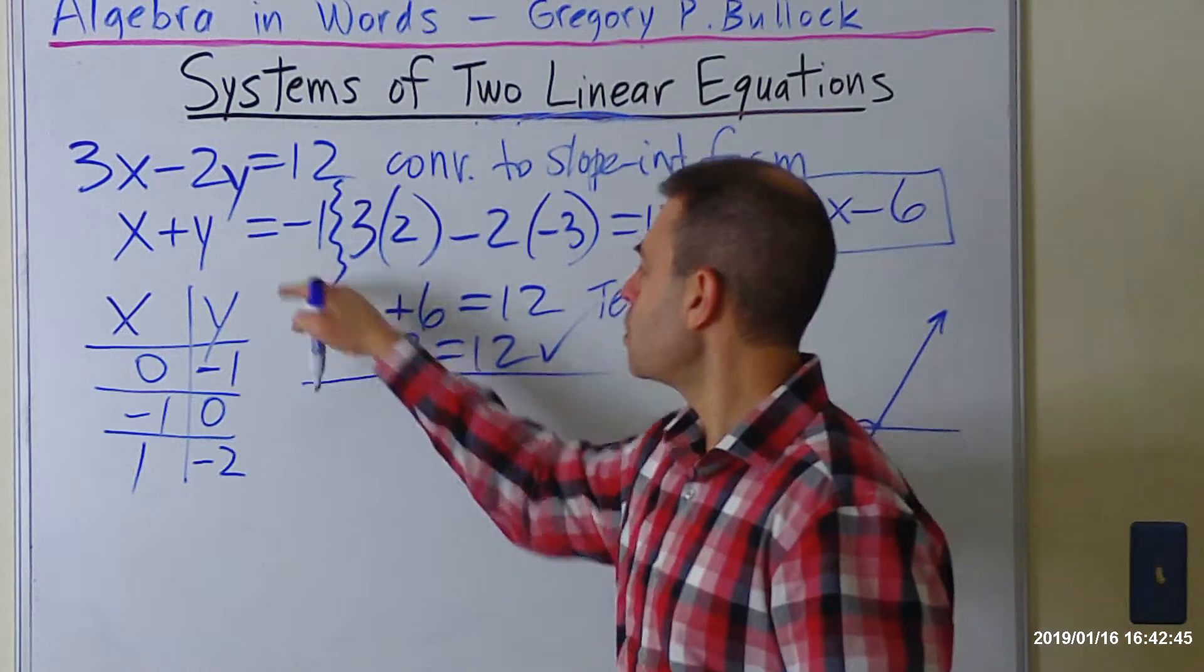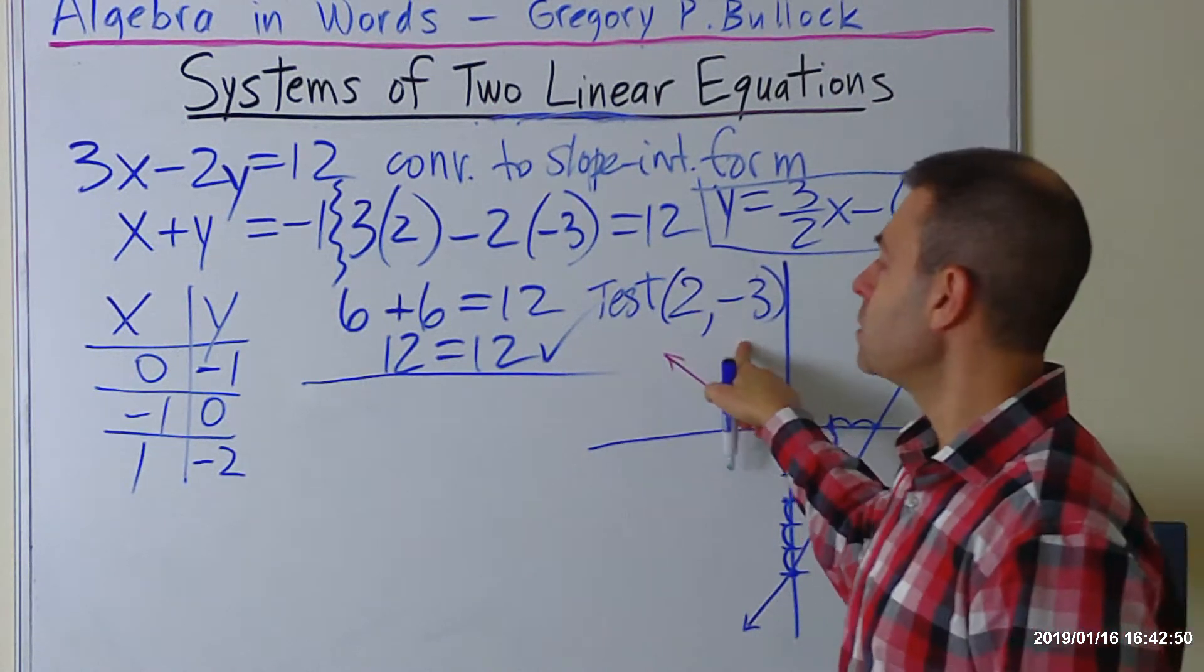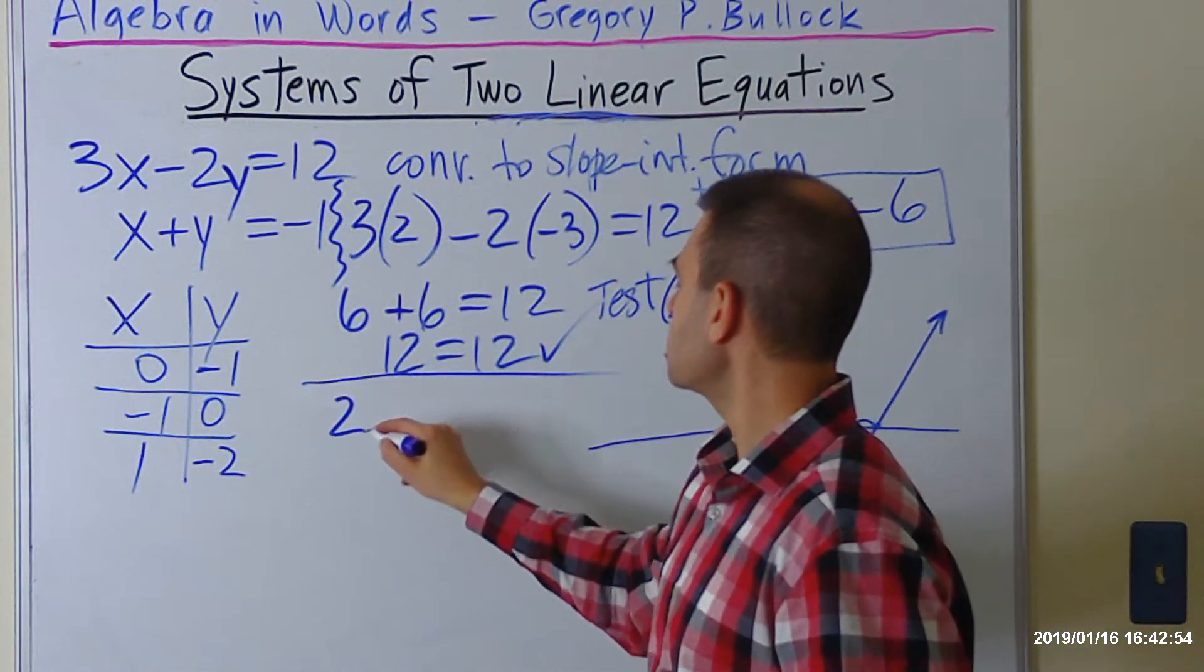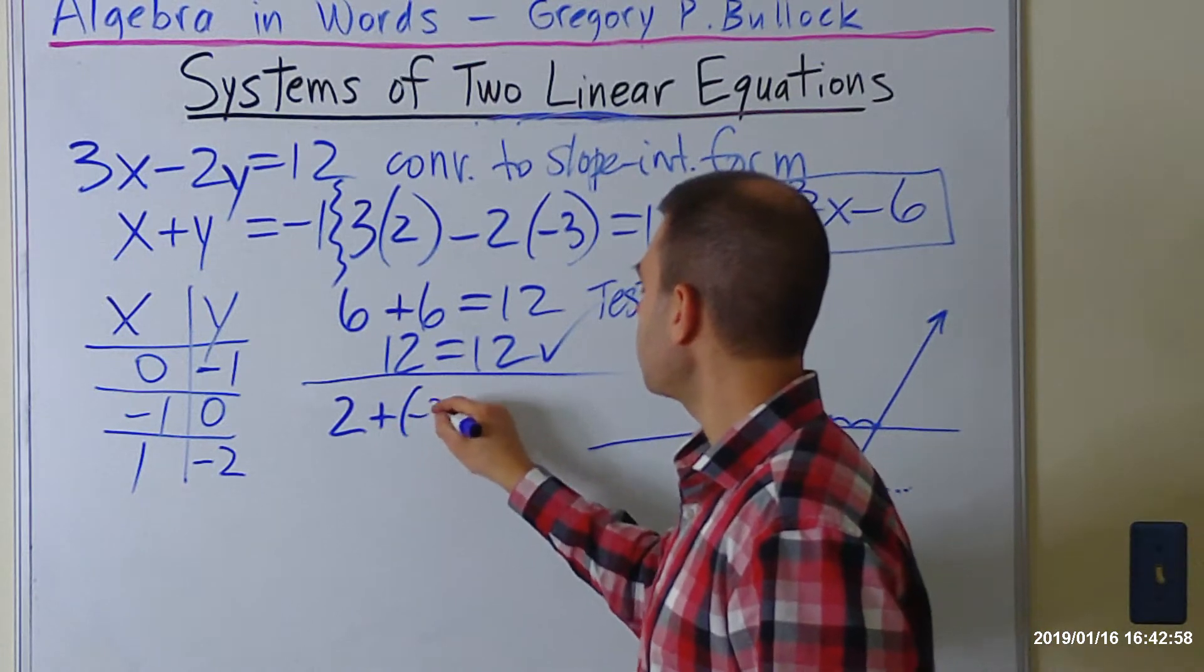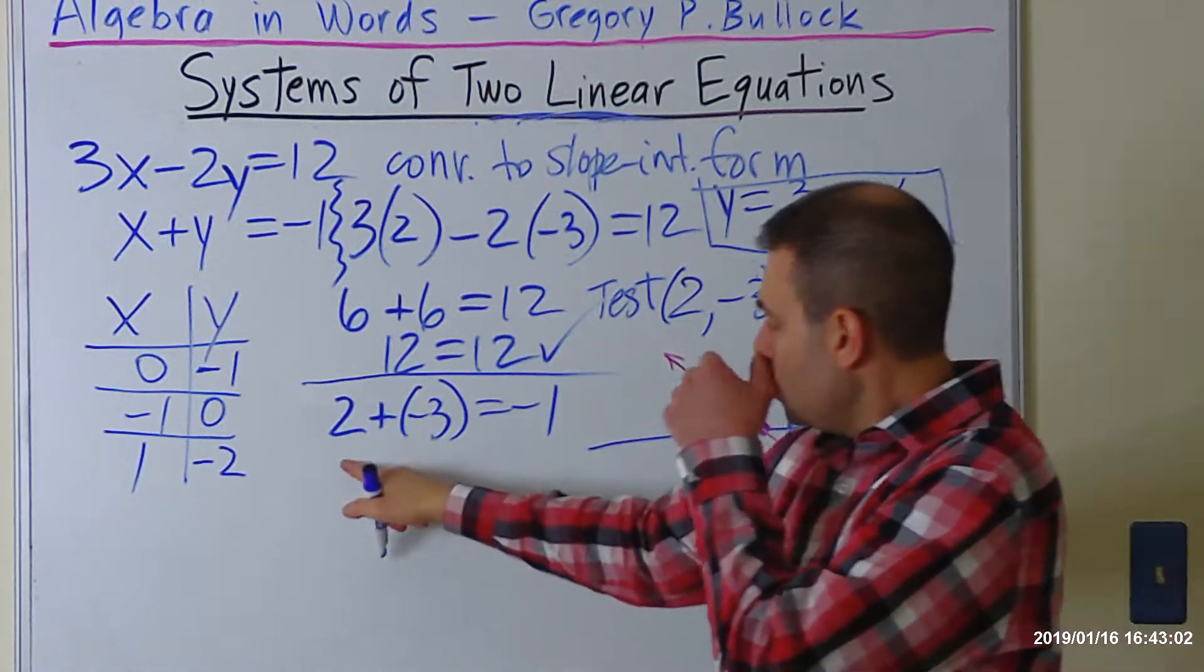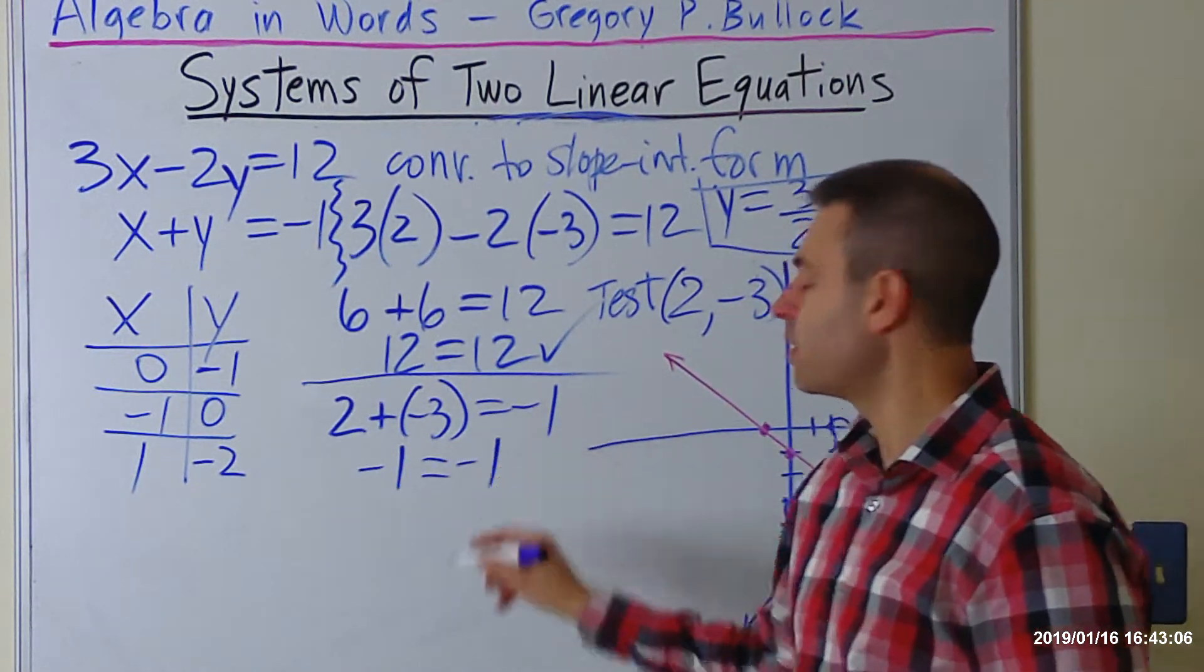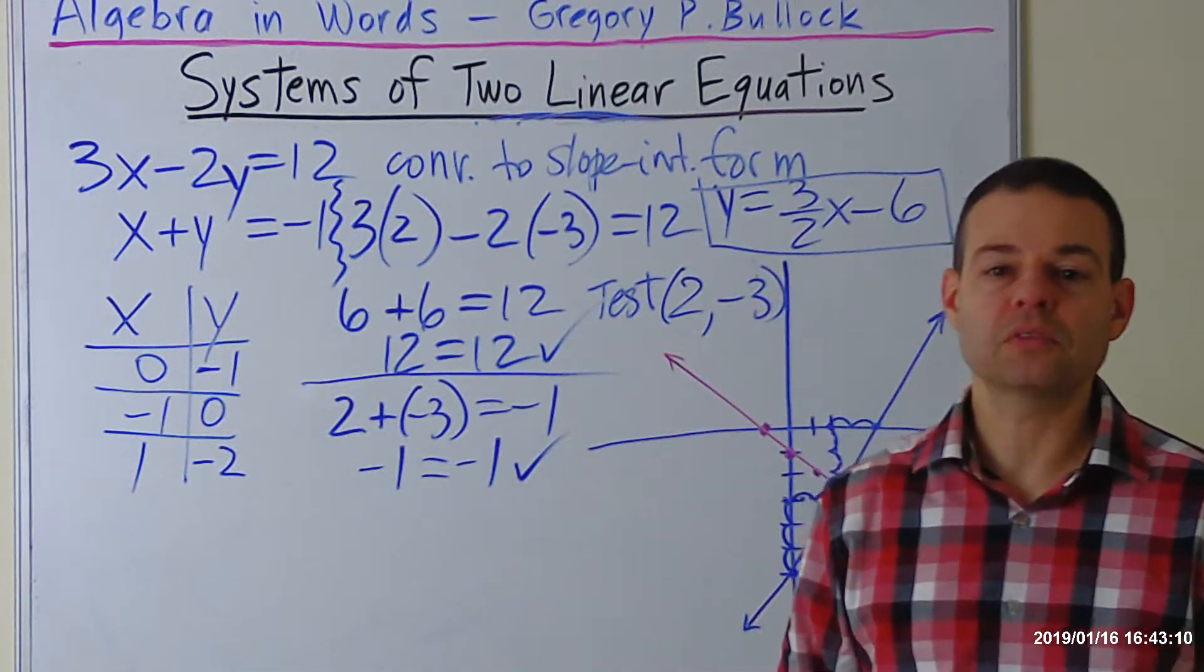Now in this one, again, we're testing 2 and negative 3. So for this equation, we're going to put 2 in for x, and for y, I'm just going to make that negative 3 equals negative 1. 2 minus 3 is negative 1, and the right side is already negative 1. So let's put a check because the left side equals the right side.